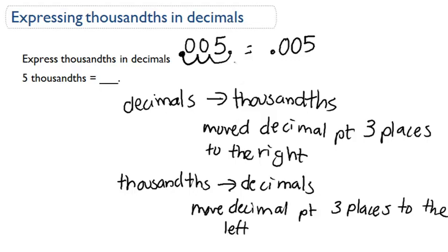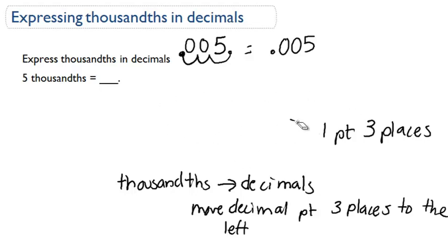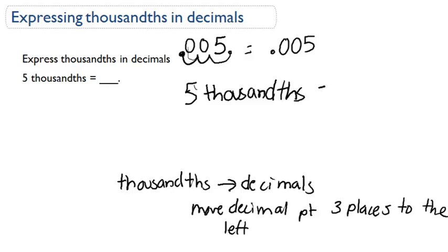So this is really written as—and I'm going to erase this part down here so we have a little more room. So this is really written as what we're trying to say: five thousandths. Five thousandths is equal to .005.